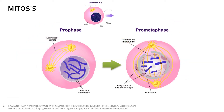The next phase is prometaphase, where the nuclear membrane breaks down and the spindle mechanism begins to push the centrioles to the opposite poles of the cell. Think of this as a set of ropes and pulleys, as well as anchors, that will separate the genetic material between the two daughter cells.